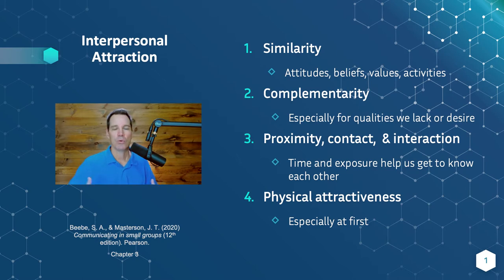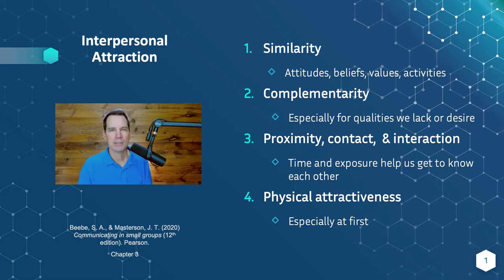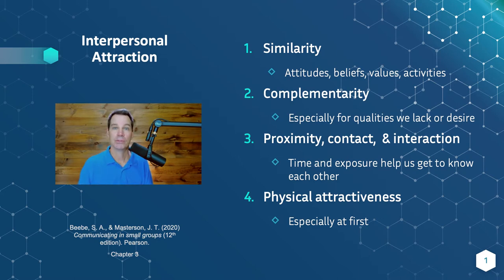So the first way that we are attracted to other people — and we'll put this word 'attraction' in quotes, because it just means how you gravitate toward certain people — it doesn't have to be romantic attraction, but it could be. And the first variable is similarity. We are connected and feel connected to people who have similar kinds of attitudes, beliefs, values, and interest in similar activities as we do.